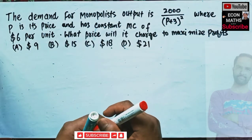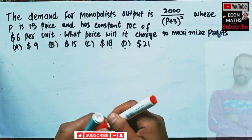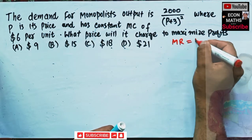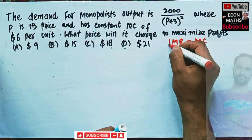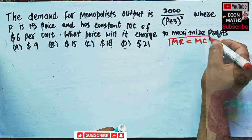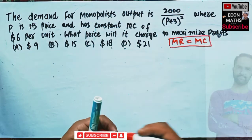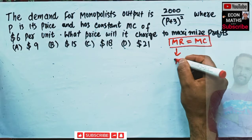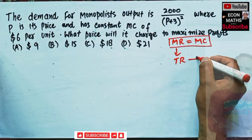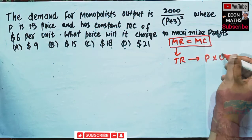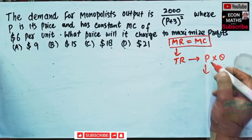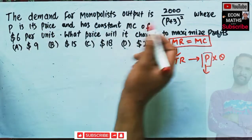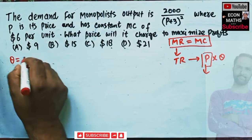Since we have the monopolist's profit maximization problem, we need to find the condition where marginal revenue equals marginal cost. Marginal cost is given; we need to find marginal revenue. Marginal revenue can be derived from total revenue, and we know total revenue equals price times output. So we need to find the inverse demand function.